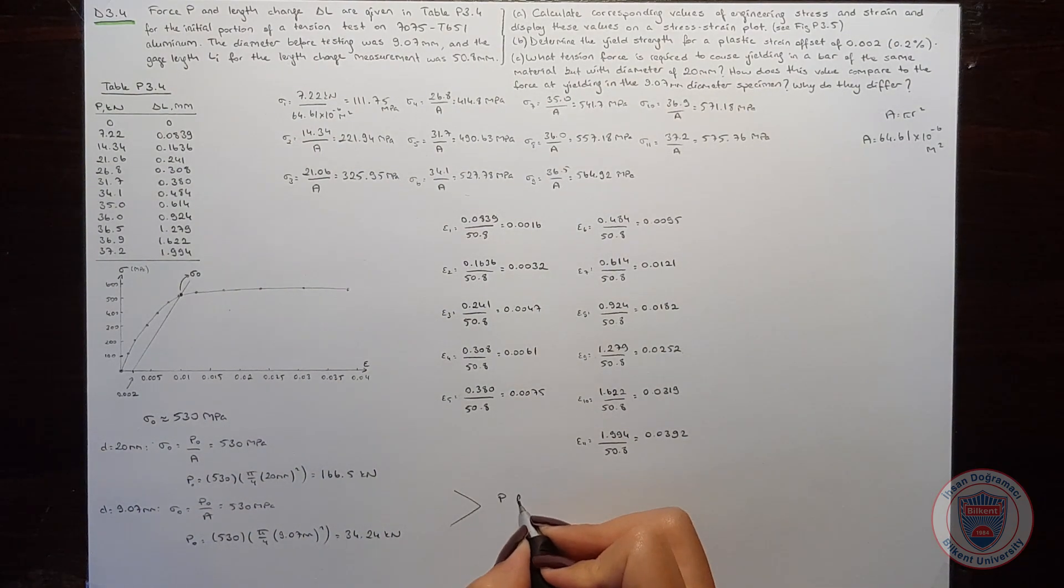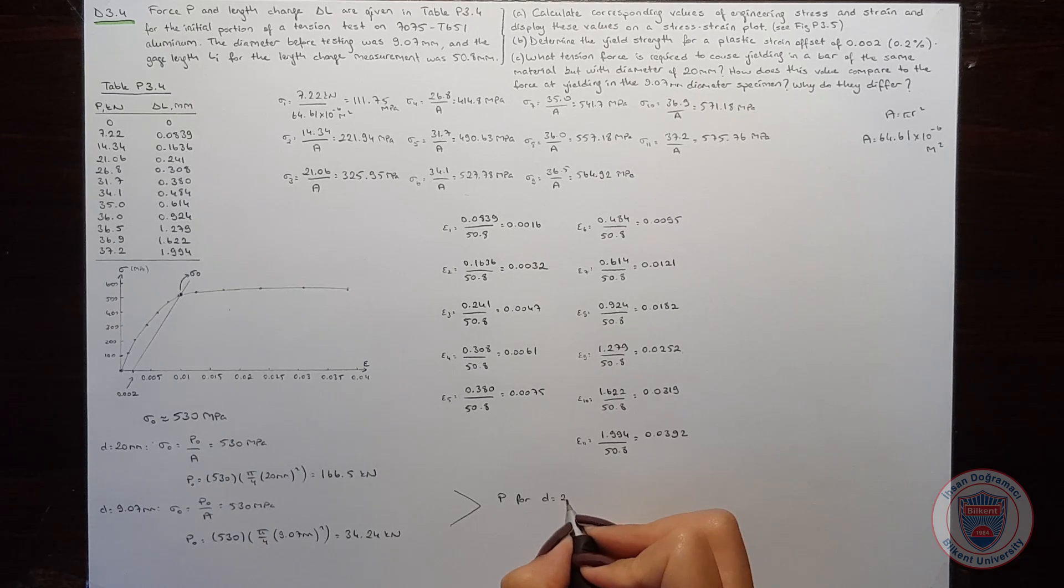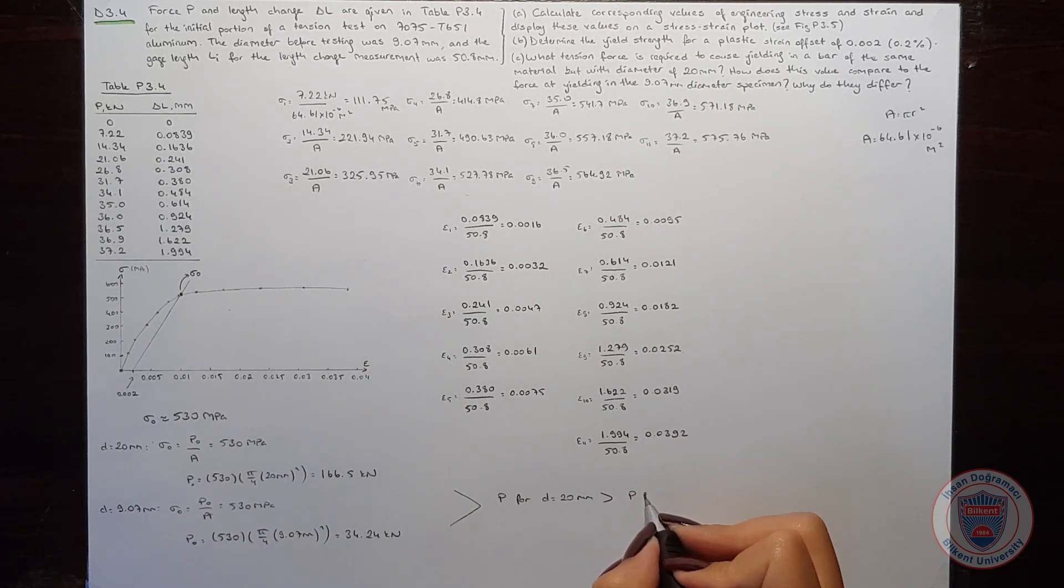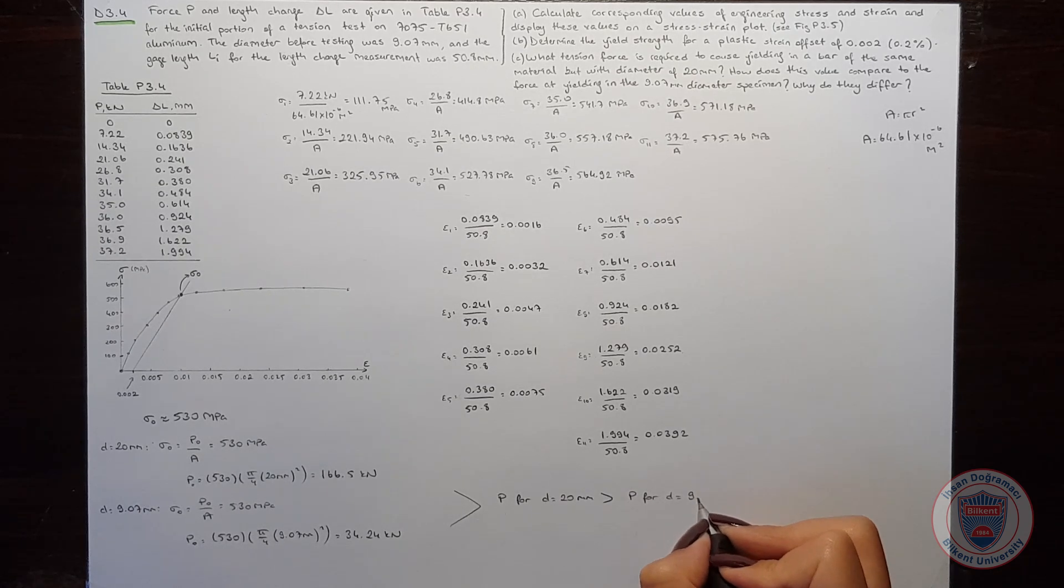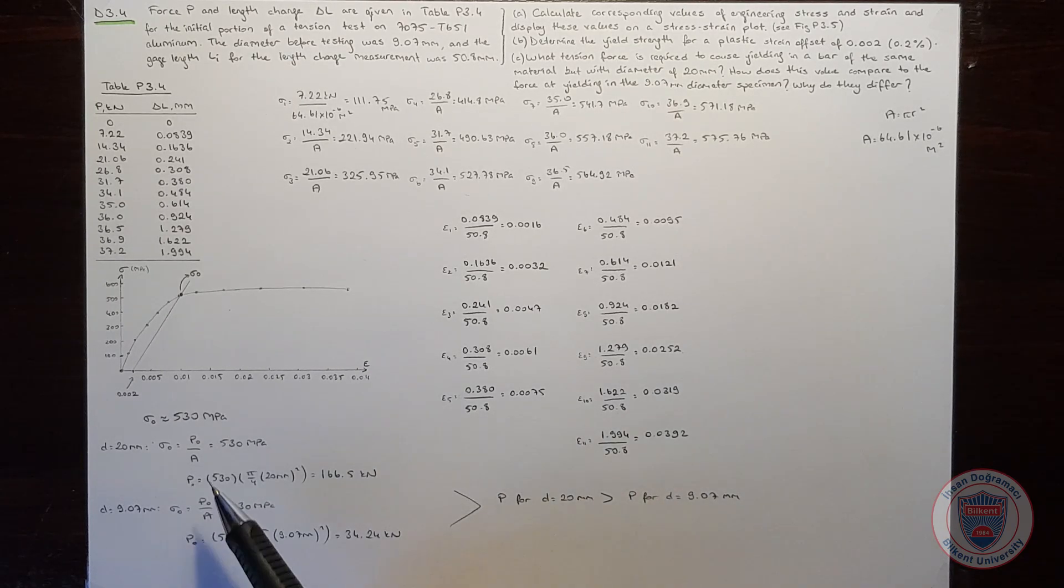We can see that P for D equals 20 mm is larger than P for D equals 9.07 mm. The reason why they are different is the equation P over A. We know that the yield strength is a constant value. So P over A always should give the same yield strength value for different areas and different forces. So we have a bigger area, the force to cause yielding should become larger too. This is why force for 20 mm diameter is larger than force for 9 mm diameter.